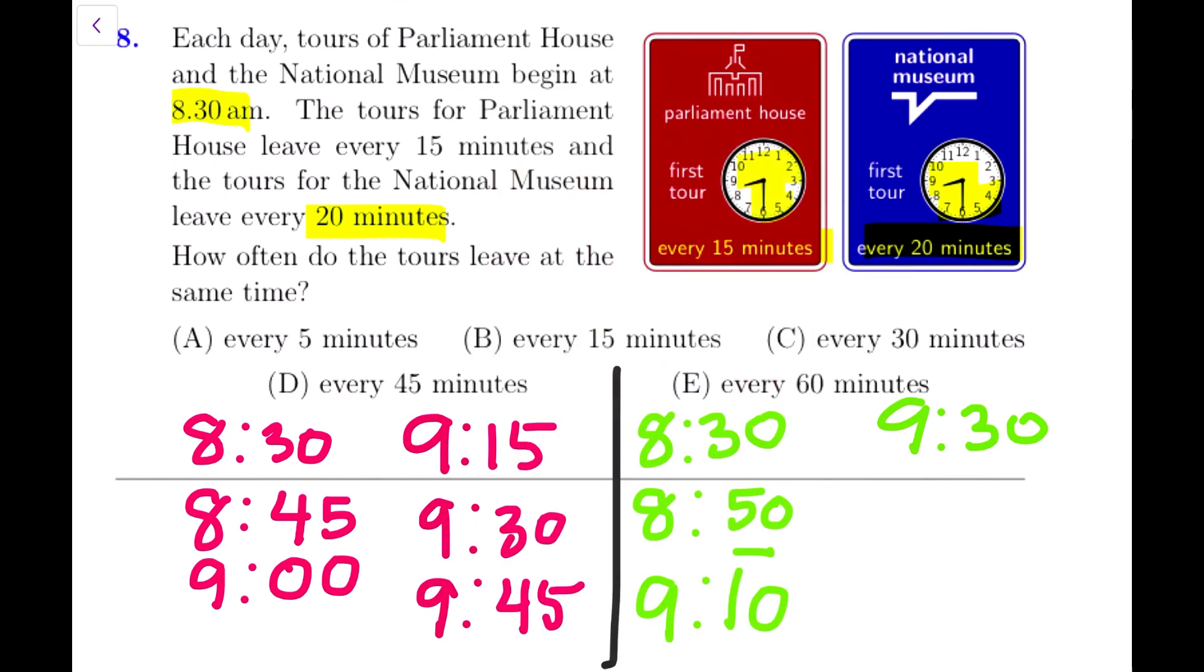We can see that none of the other times matched apart from the starting time. The starting time was the same in both, and after that none of the other times matched until we reach 9:30. And if we keep going on, we will see that after every one hour we will have the same time for both of them. So in our options, every 5 minutes, every 15 minutes, every 30 minutes, every 45 minutes - no. Our answer is E, every 60 minutes.